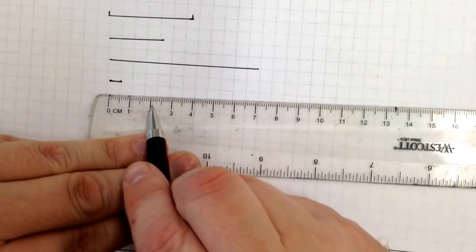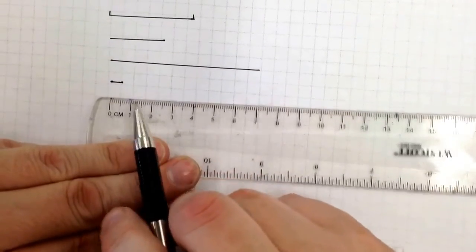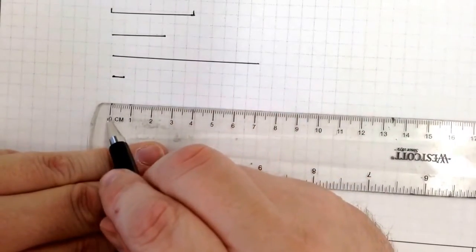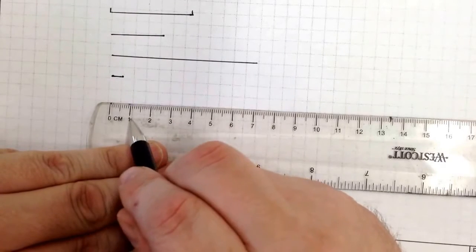Now these little lines between, these are millimeters. There are ten millimeters in every single centimeter.